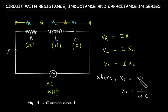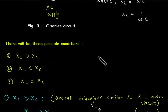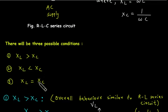Now there will be three possible conditions: either XL is greater than Xc, or XL is less than Xc, or XL is equal to Xc.